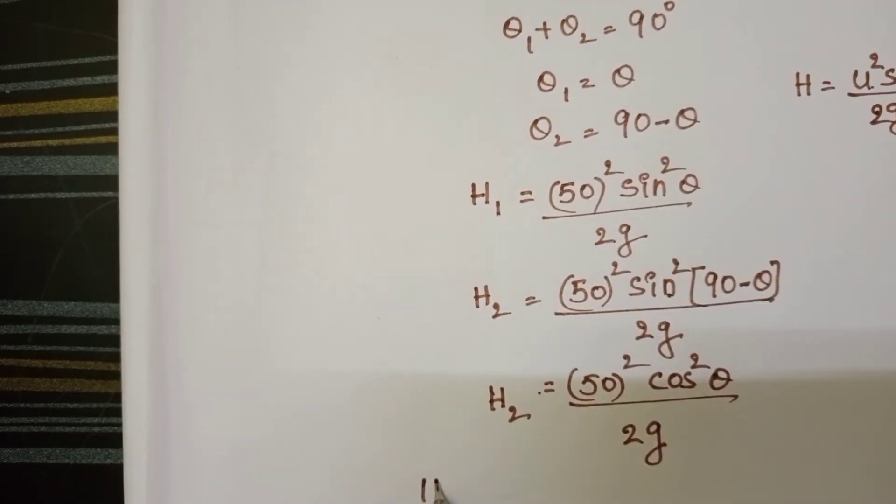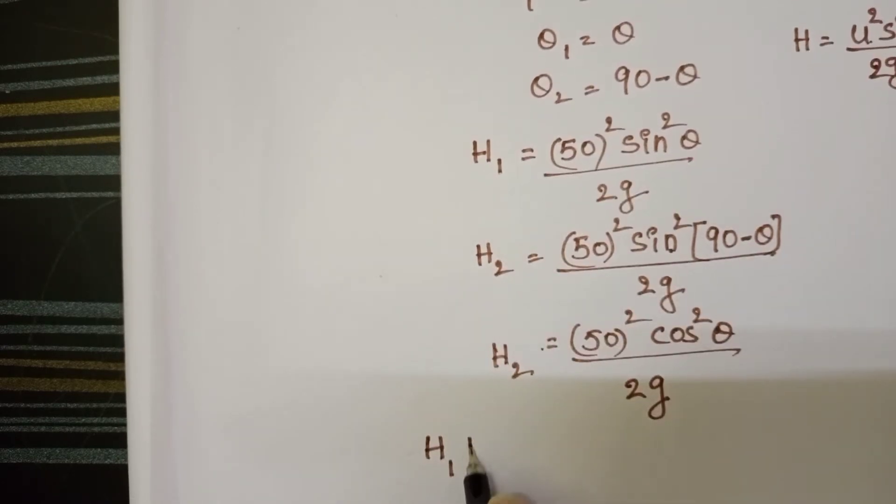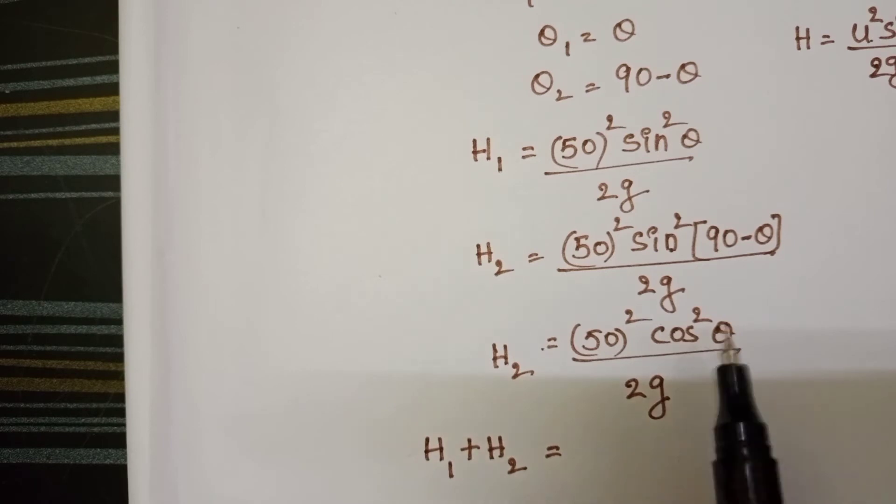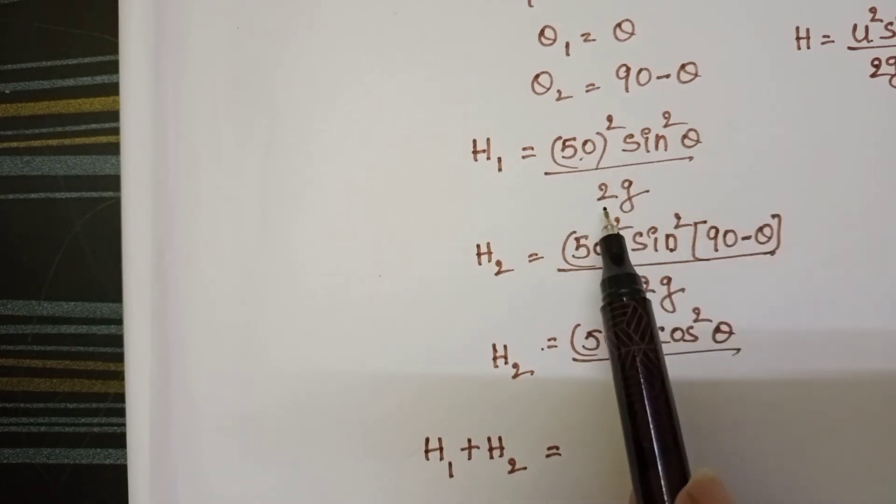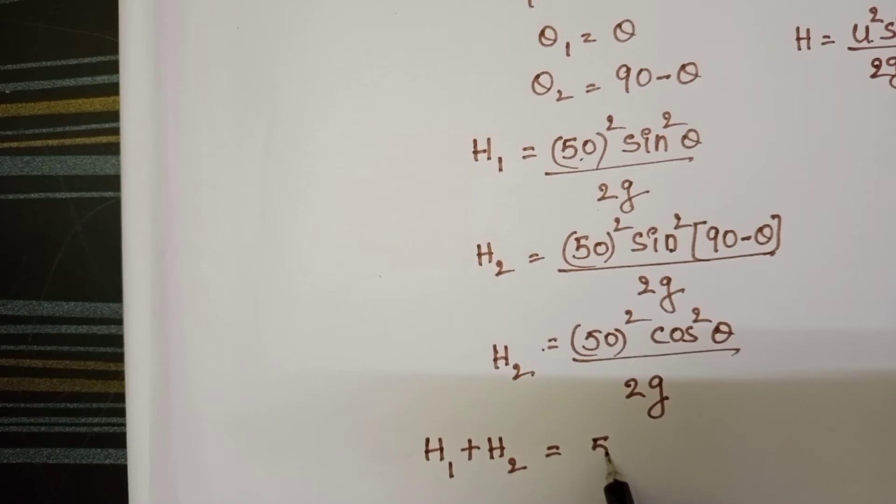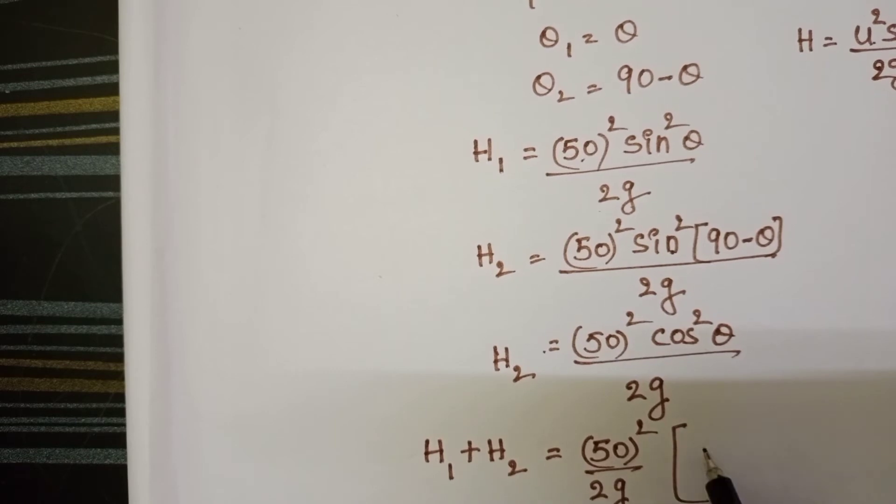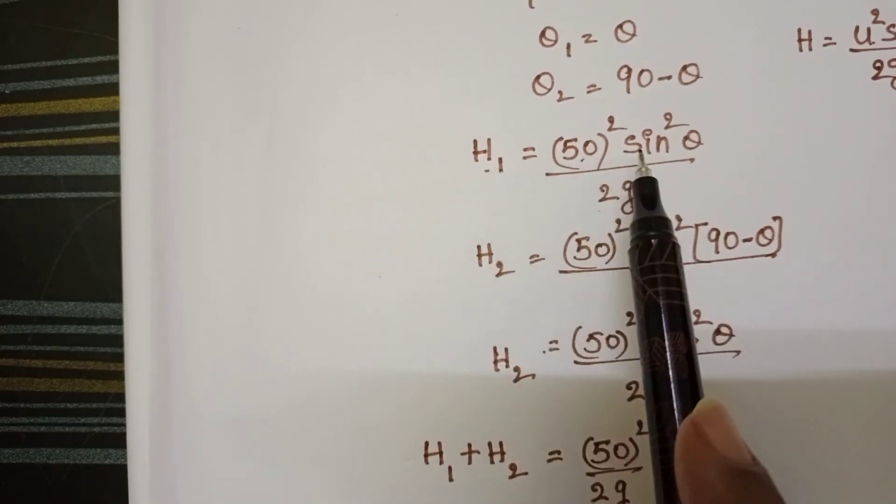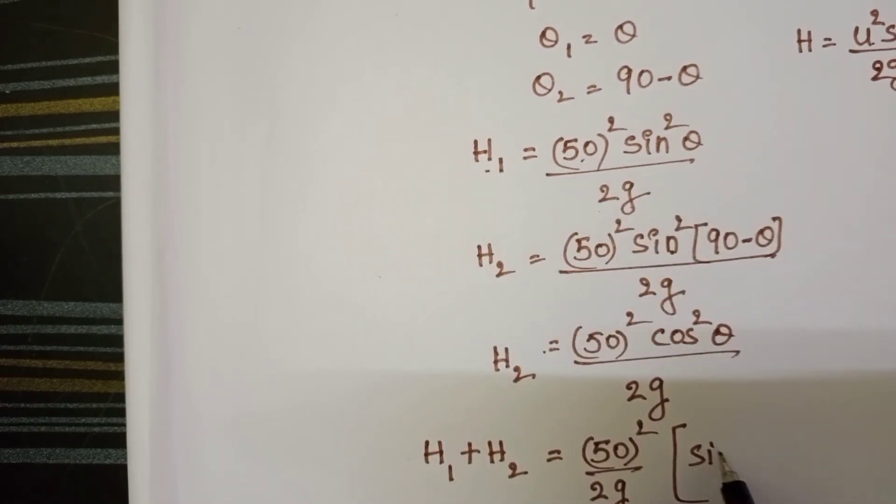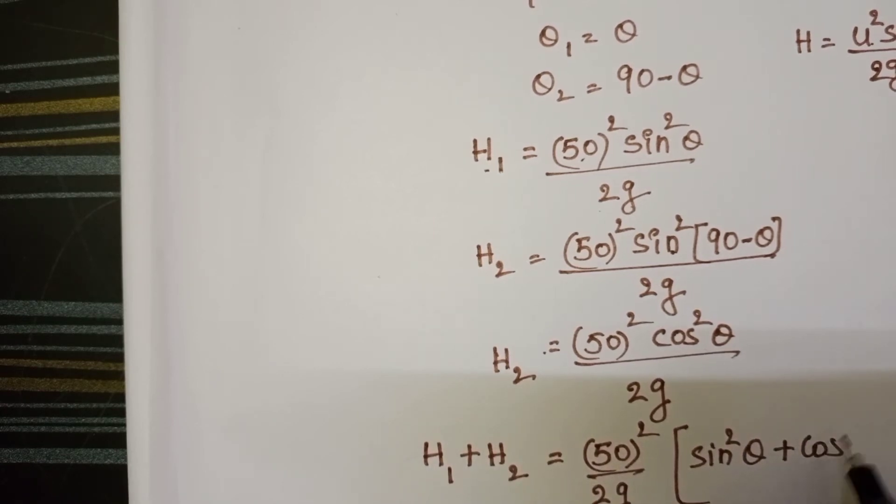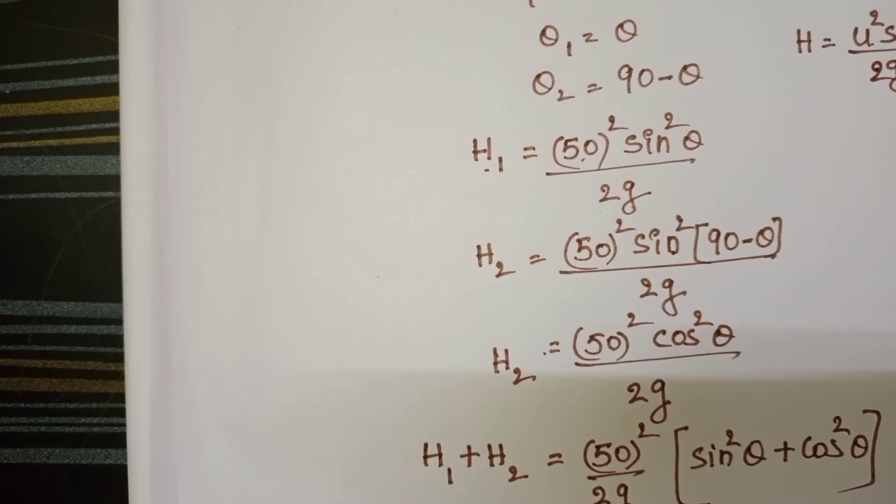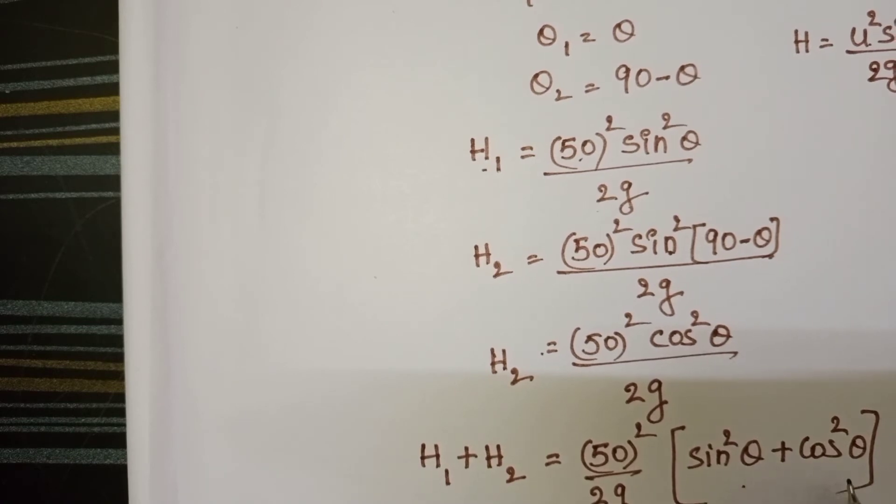For simplification find out H1 plus H2. Here velocity and 2g are common, so 50 whole squared by 2g into, in H1 sine squared theta is there and in H2 cos squared theta. Sine squared theta plus cos squared theta equals 1.